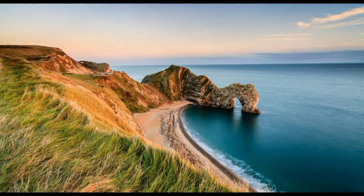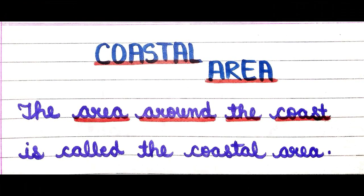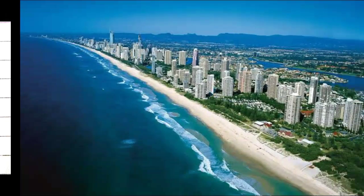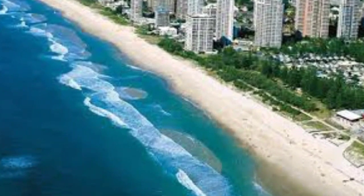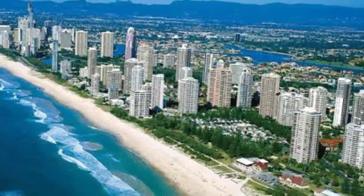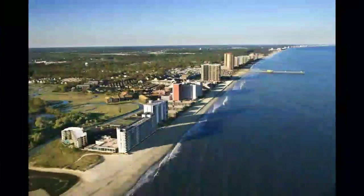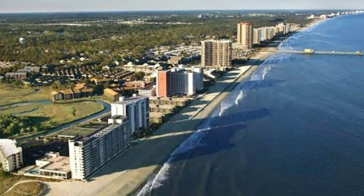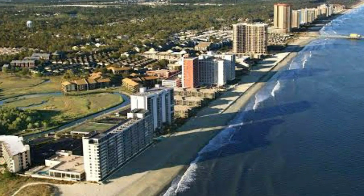What is a coastal area? The area around the coast is called the coastal area. As you can see here, the land meets the sea, and the area around the coast is called the coastal area. These coastal areas are generally defined as the crossing point or transition areas between land and sea.